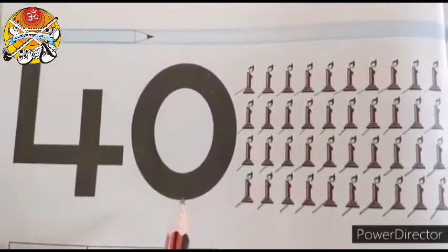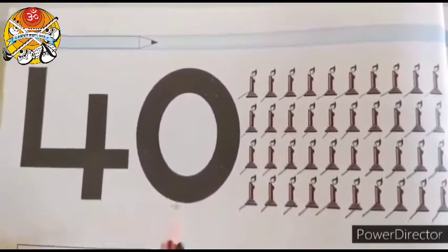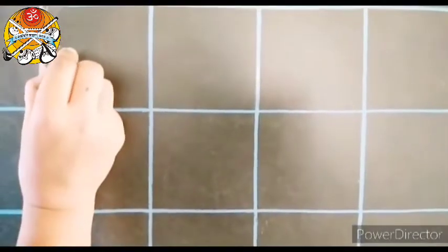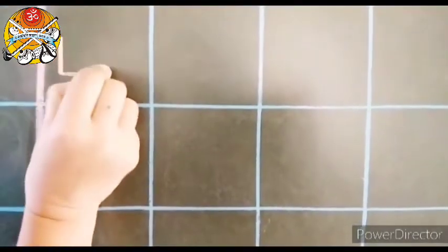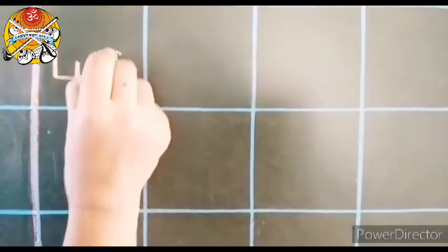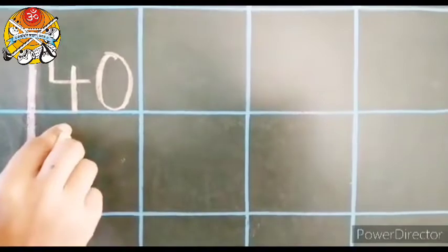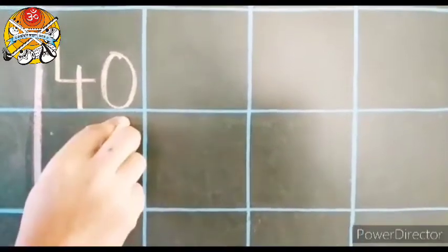So now let's learn how to write numeral 40. For that look on the board. Let's start from first box. 4, 0, 40. This is numeral 40.